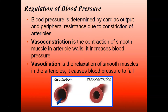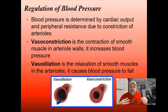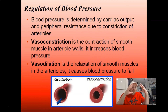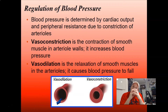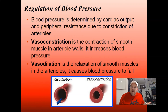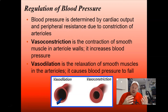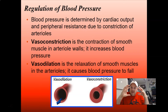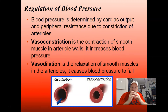Blood pressure is determined by cardiac output and peripheral resistance due to constriction of arterioles. Think back to that hose: if you have vasoconstriction, your smooth muscle layer is pushing in and making the lumen smaller, which is going to increase the pressure. It's like a fireman trying to force a big hose's pressure through a small hose — that could be very dangerous. Sometimes it's purposeful, and you change your blood pressure throughout the day by squeezing it together — that's vasoconstriction.